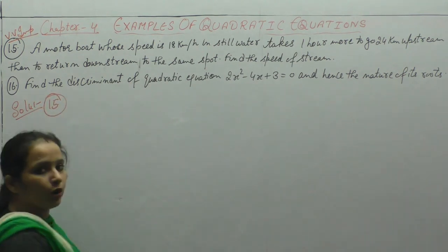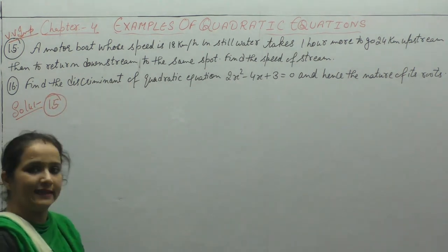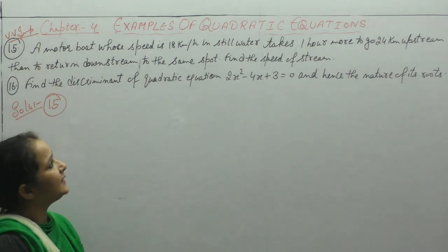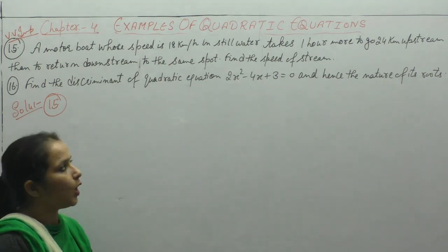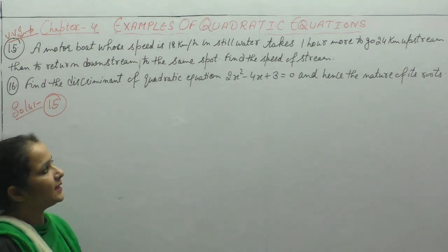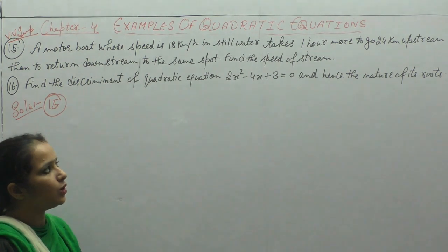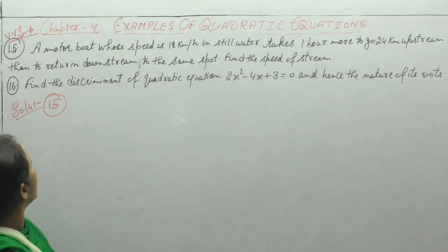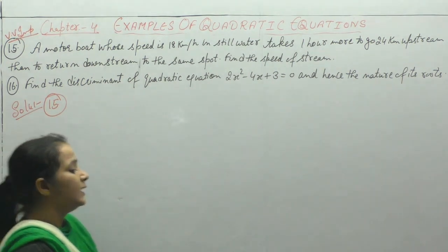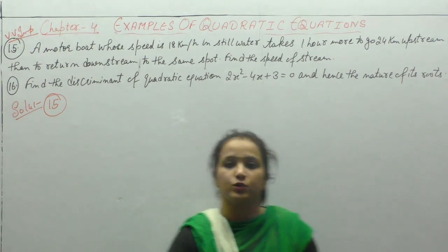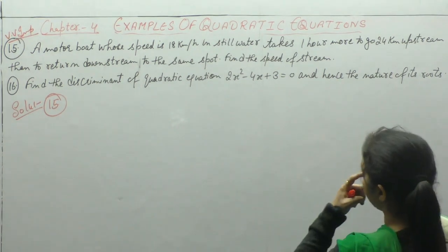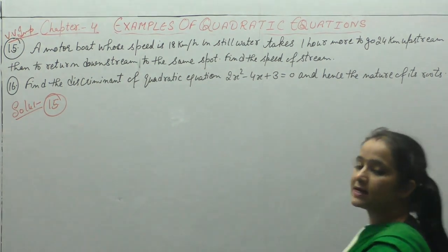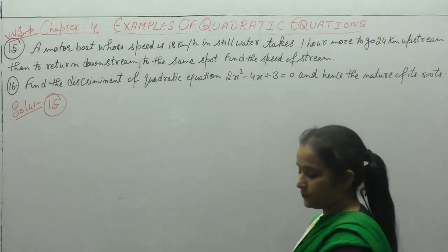A motor boat whose speed is 18 km per hour in still water takes 1 hour more to go 24 km upstream than to return downstream to the same spot. Find the speed of the stream.